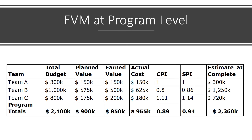When teams in a program are comparable in size and velocity, the agile EVM calculation can be made over the whole program. But often teams are not comparable — they work on different parts of the project with different velocities, different story point values, and different project costs. When teams have different characteristics, we need to calculate the earned value for each team and then add them up to a total earned value. Similarly, calculate the planned value for each team and add them up for the total planned value. From there, all EVM calculations remain the same.